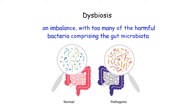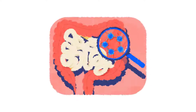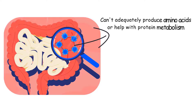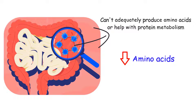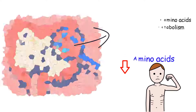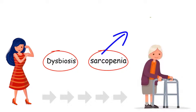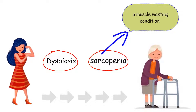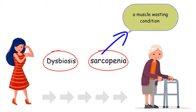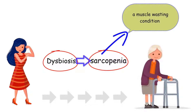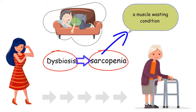Dysbiosis is not just a sign of poor health or low physical fitness — it may also be one of the causes of these problems. Some bacteria that appear in dysbiosis cannot adequately produce amino acids or help with protein metabolism, meaning fewer amino acids are available to support muscle growth and maintenance. Considering dysbiosis is seen with aging and sarcopenia, a muscle wasting condition, some experts believe dysbiosis might be one cause behind this muscle mass loss and the decreased physical fitness often seen with old age.